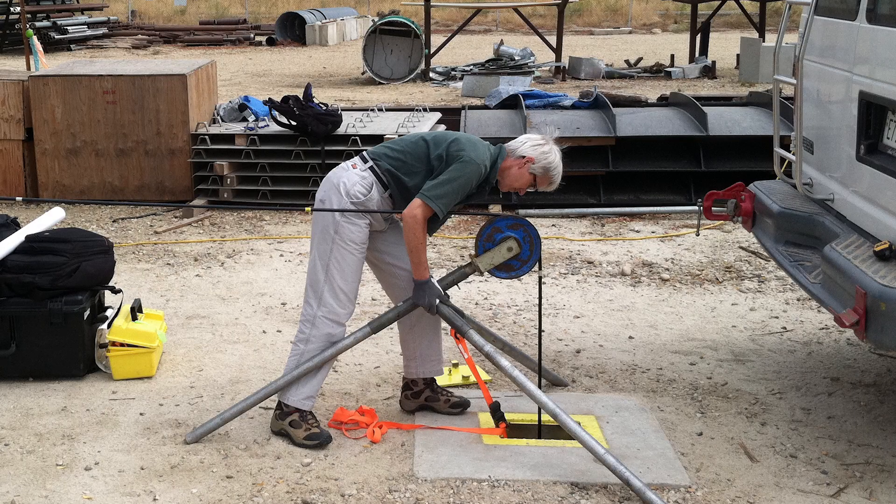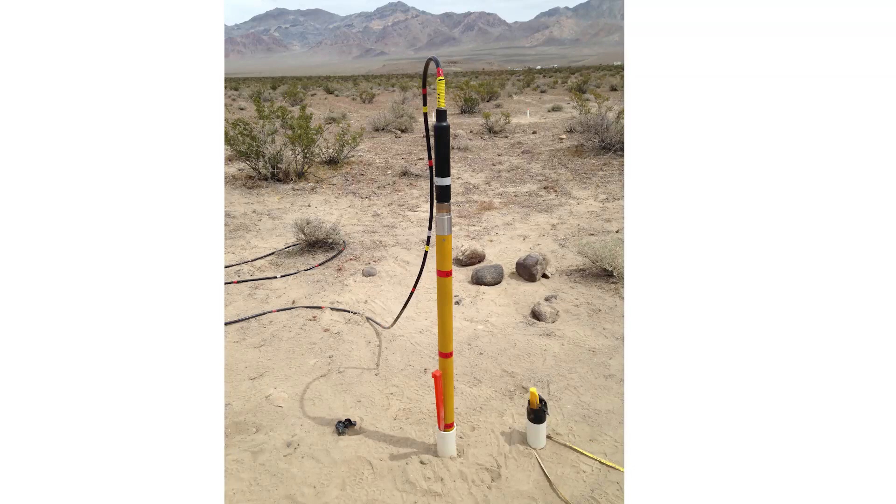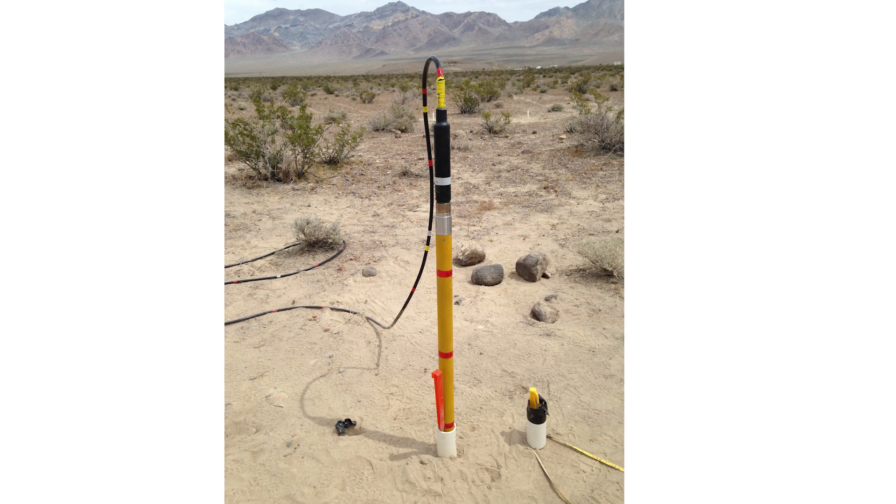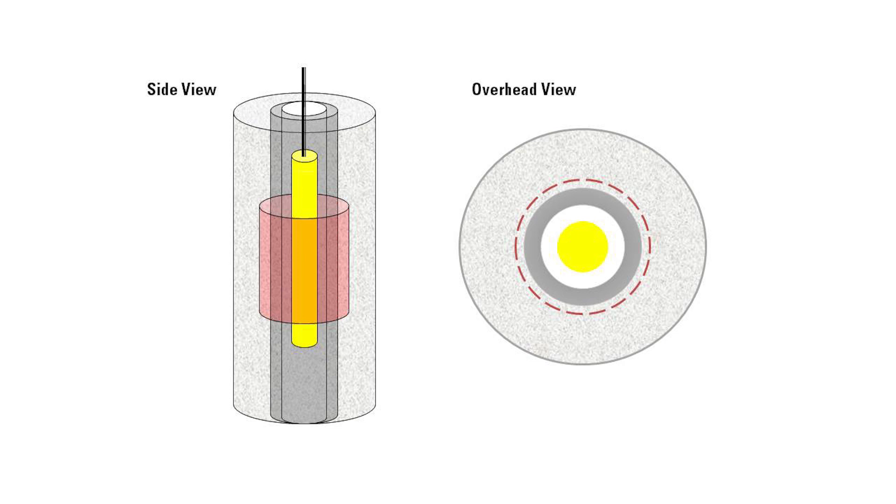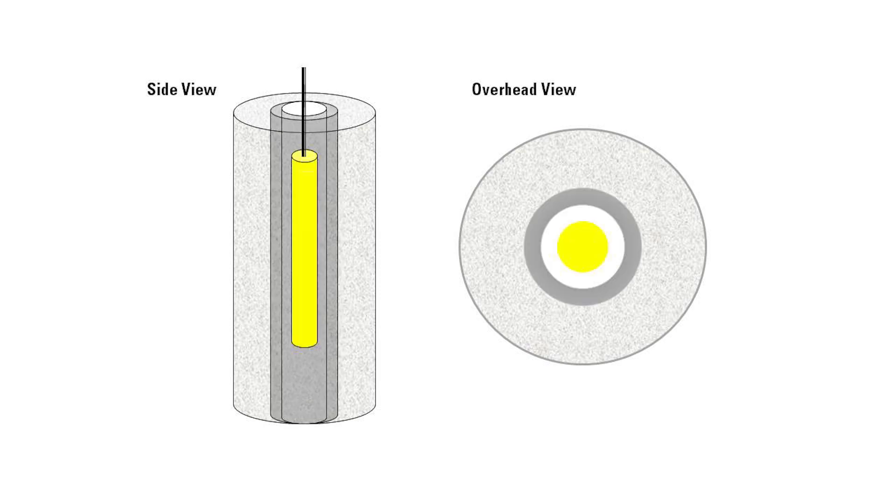Different borehole NMR tools are sensitive to different radial distances from the tool. Therefore, different diameter boreholes require different tools. Each tool is sensitive to a specific distance from the center of the tool. Before you install your borehole, you have the undisturbed subsurface formation. When a borehole is drilled, the area immediately surrounding the borehole is also disturbed. When we conduct borehole NMR logging, each tool is sensitive to a different radial distance in order to take measurements of the undisturbed formation.